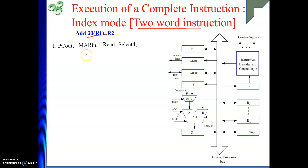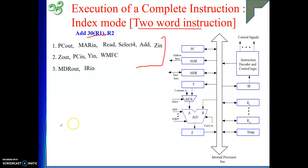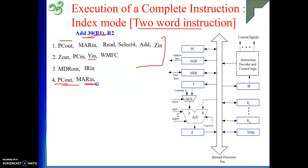For the two-word instruction, the first part — getting the first word of the instruction — is similar to the previous discussion. We have got the first part of the instruction into IR. Now I need to get this 30 (the offset) from memory, because 30 is not stored in the same word — it is in the subsequent word. PC is pointing to that address. So PC out, then MAR in.